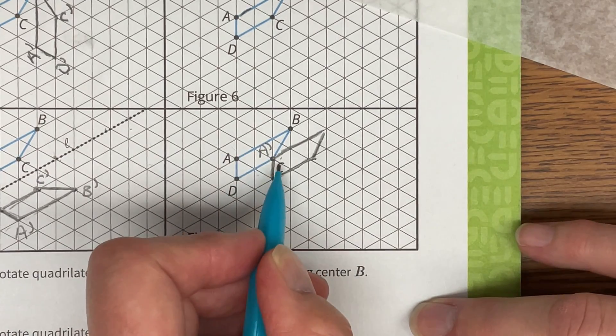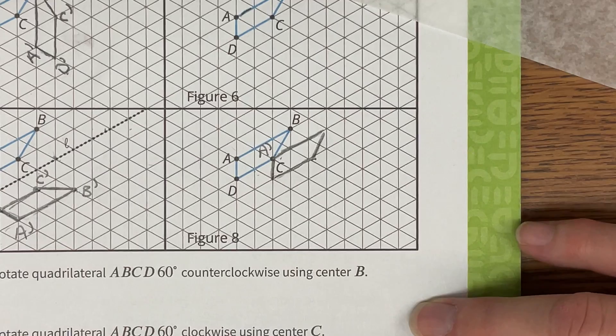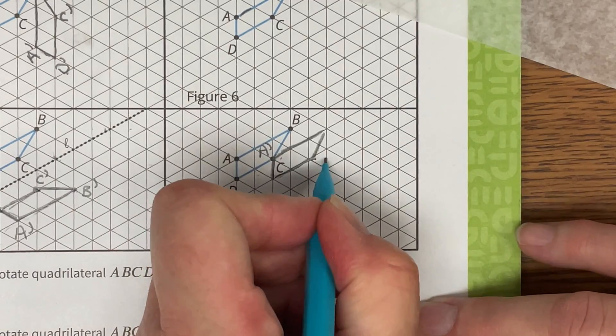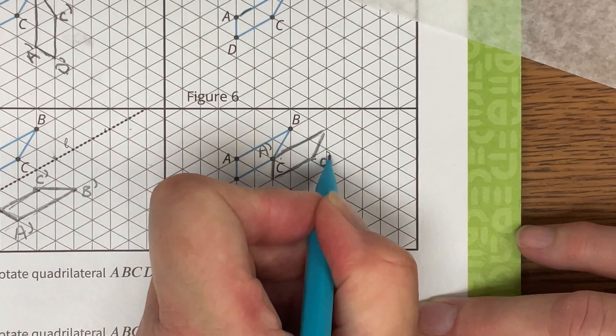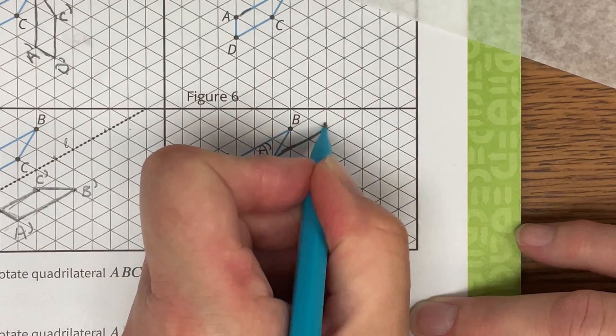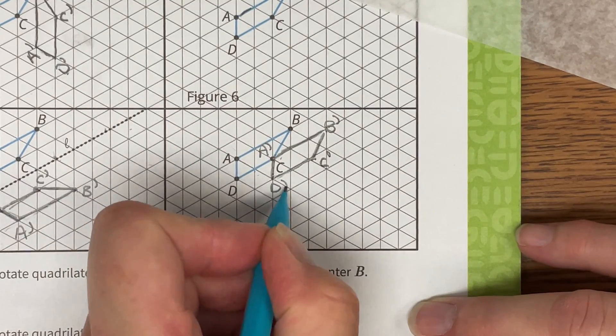So A was over here before and now this point is gonna be called A prime. So it's the original pre-image C but now it's image of A prime. C prime ended up over here and this would be B prime and this would be D prime.